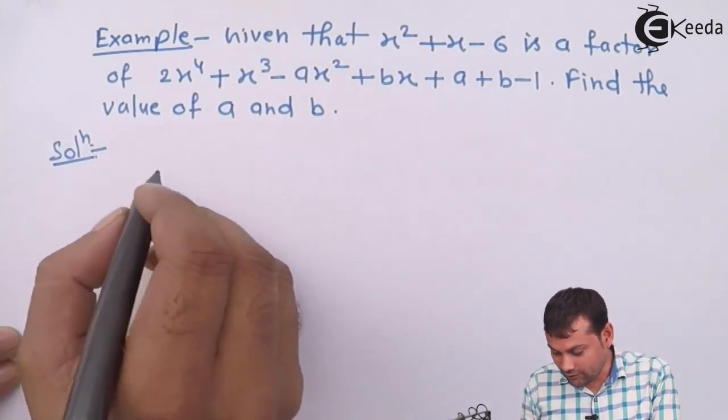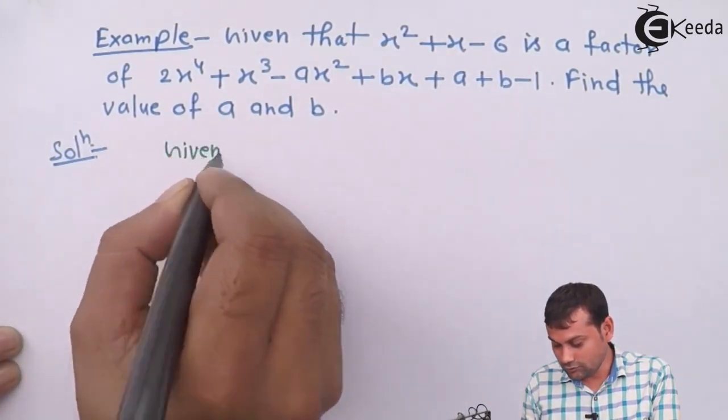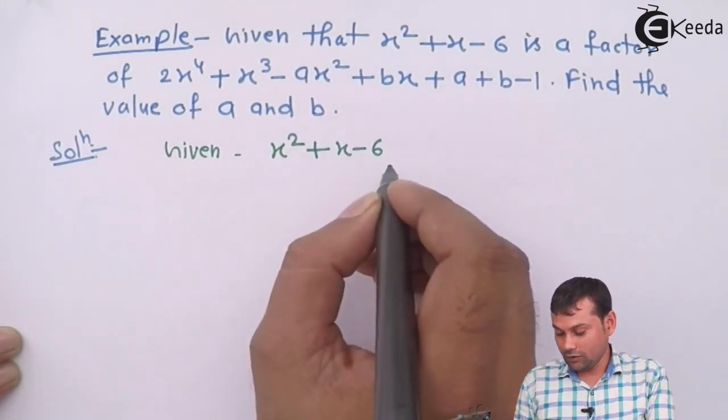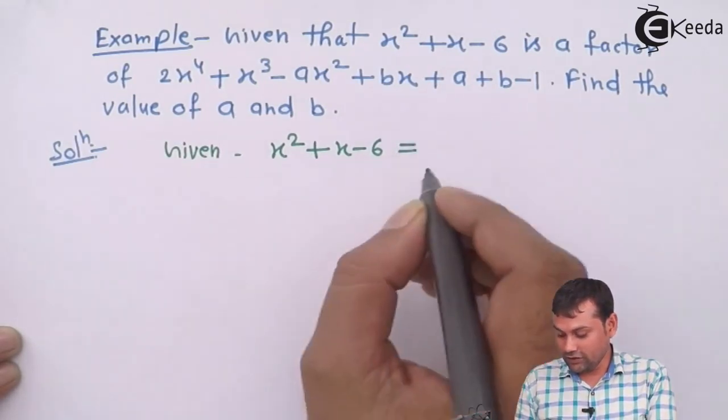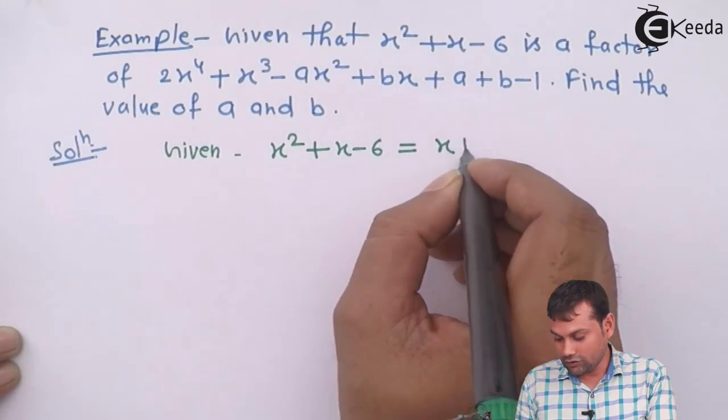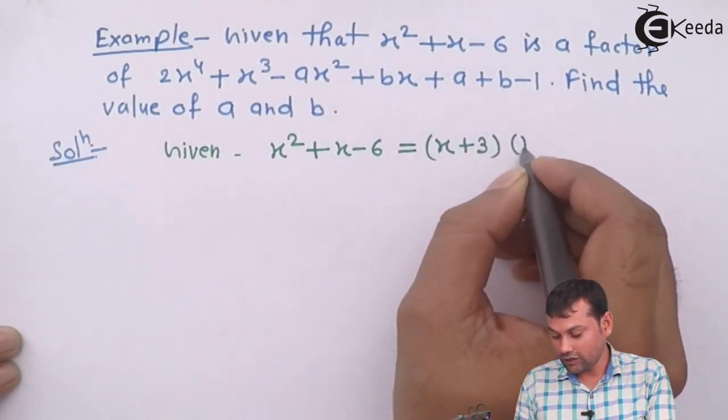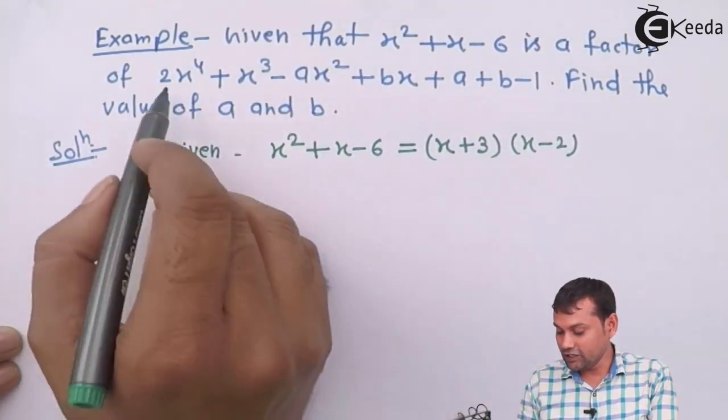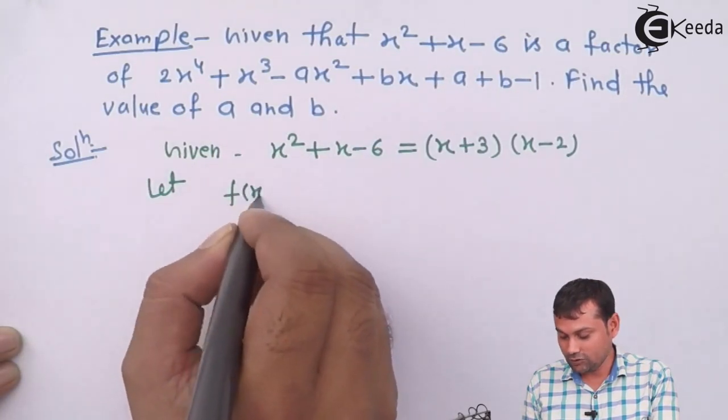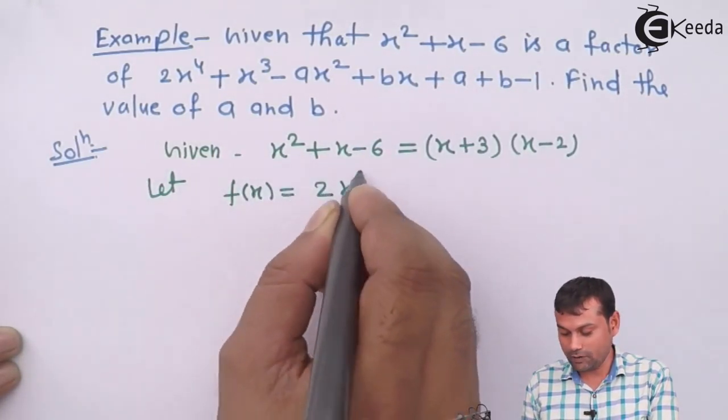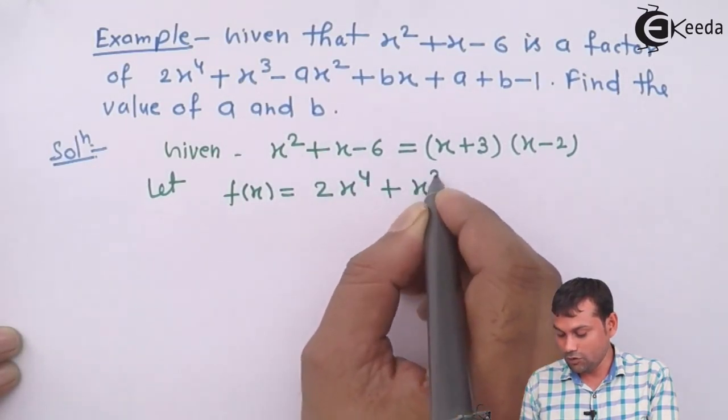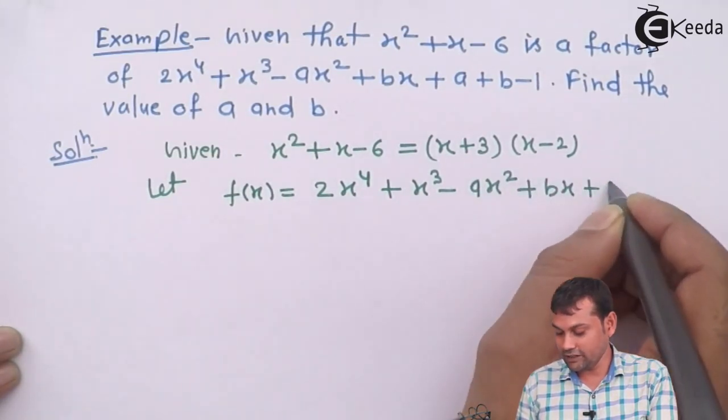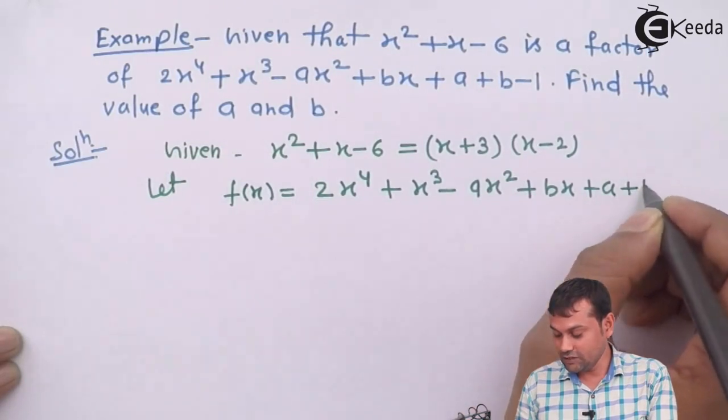Given that x² + x - 6 is a factor of 2x⁴ + x³ - ax² + bx + a + b - 1. Find the value of a and b. Here, I'm going to solve this problem using factor theorem. In the problem, this is the factor. So I'm going to write this in linear factor.